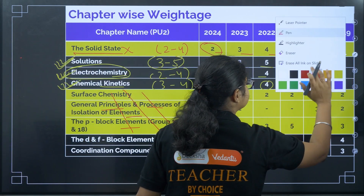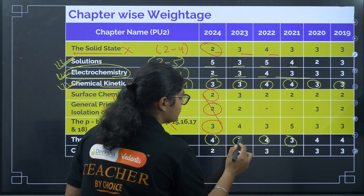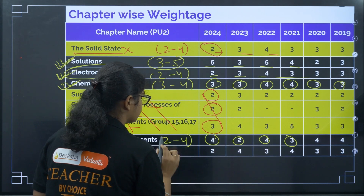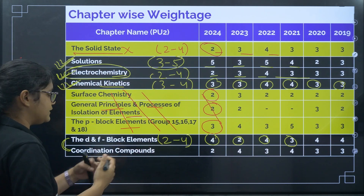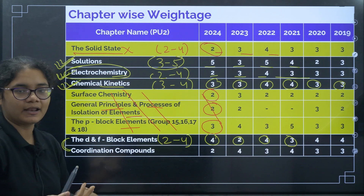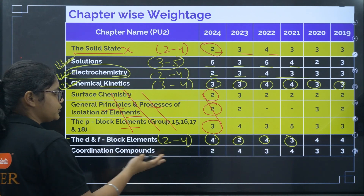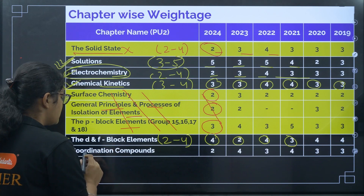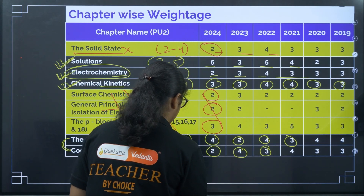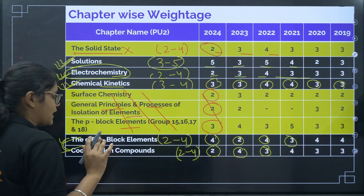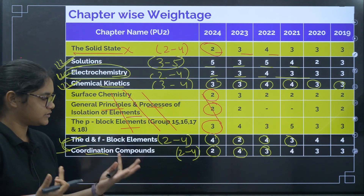Coming to D&F Block — four, four, three, two questions over the years, so you can expect two to four questions from this chapter. These topics are a little interrelated — color, magnetic moment, and configuration. In Coordination Compounds — two, four, three questions — again two to four questions can be asked. Very easy and scoring topics, theory-based chapters where you just need to memorize certain things.